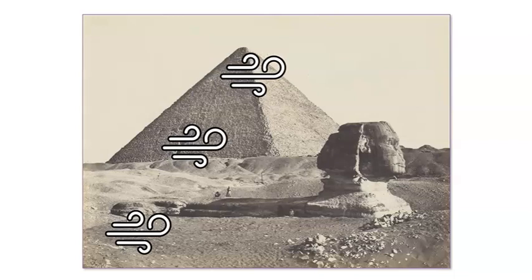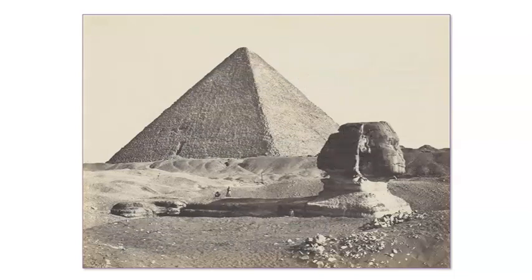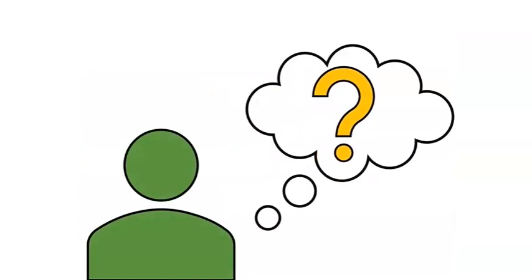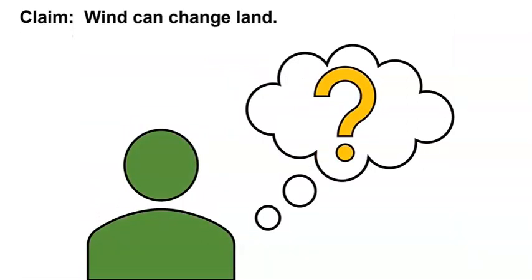Some scientists think that wind changed the land around the Sphinx and caused the sand to bury the Sphinx. What do you think? Can wind affect land? I think we can start to make a claim based on this explanation. What claim can we start with? Let's start with the claim that wind can change land. Now what do we need to do next? We need strong evidence to support our claim.